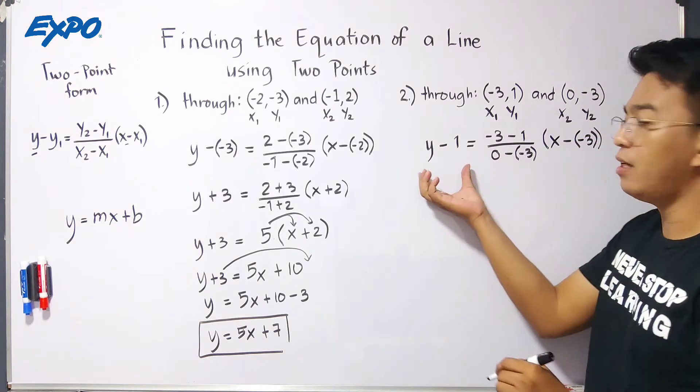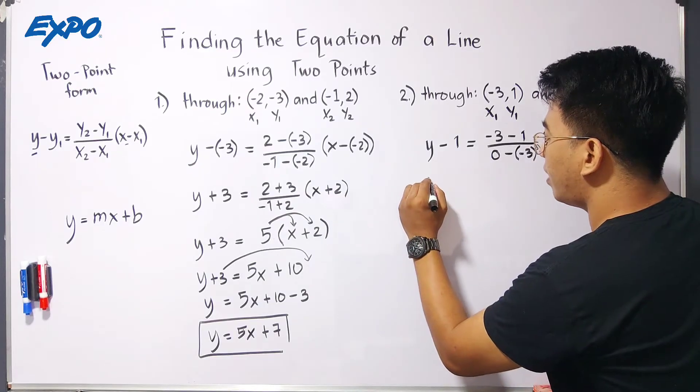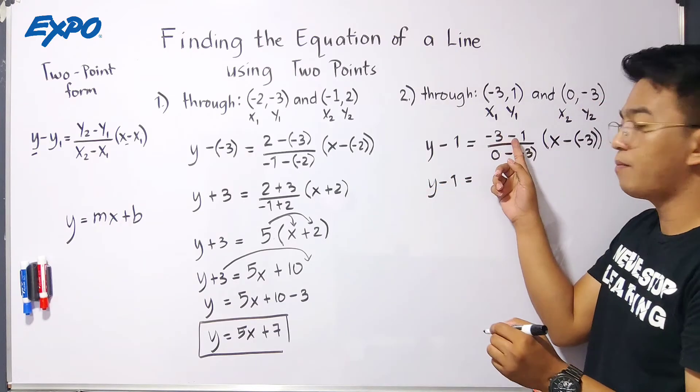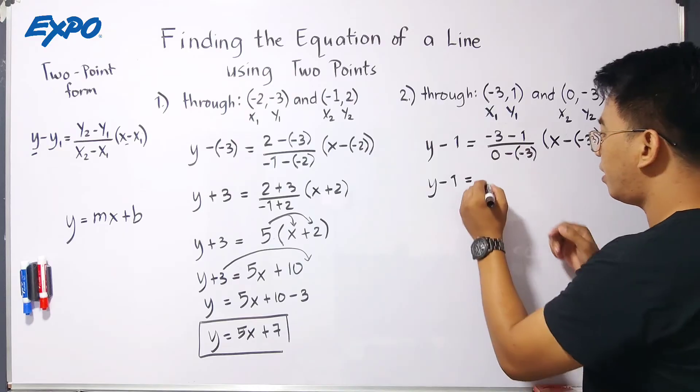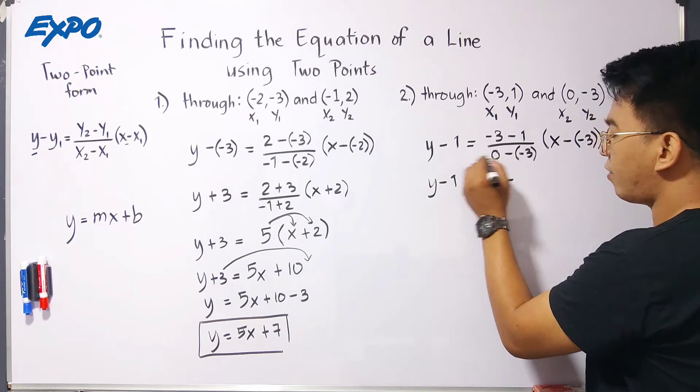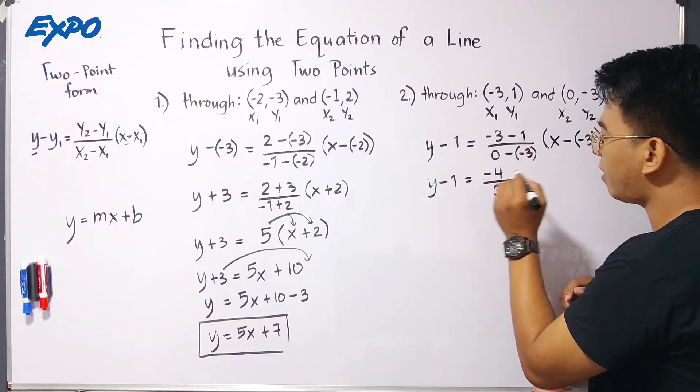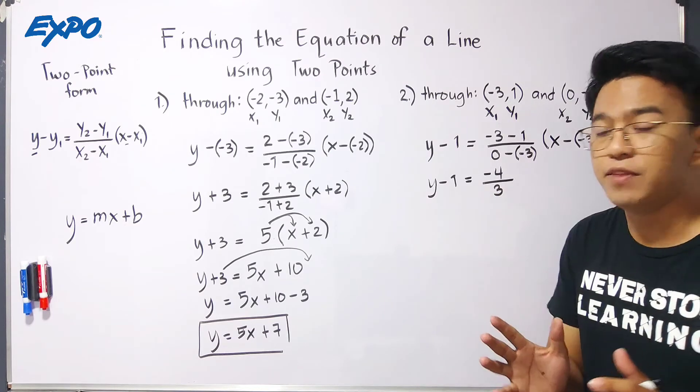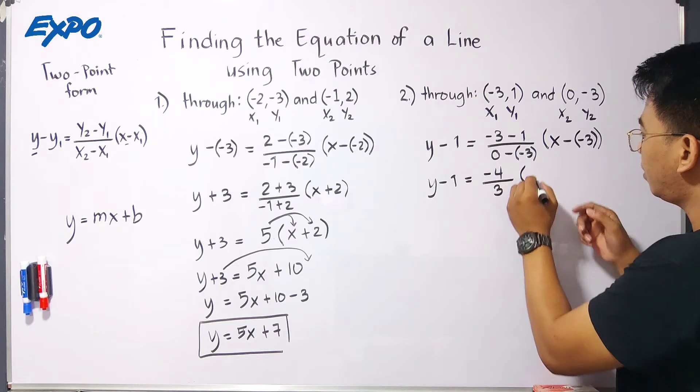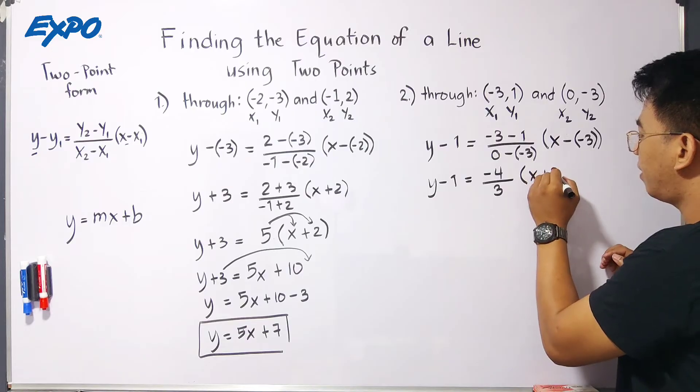Now, let's simplify. Here, on the left side, what we need to do is just copy this one. Y minus 1. For this part, negative 3 minus 1 is negative 4 over 0. Zero there. Negative times negative is positive 3. So, we have here 3. Or positive 3. Here, times x negative times negative, guys. This is positive, so plus 3.